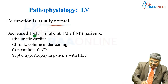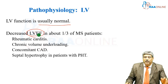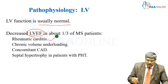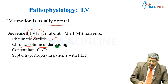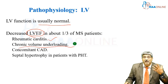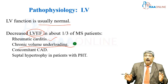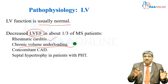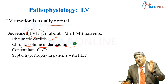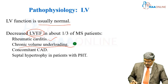Sometimes the ejection fraction of the left ventricle can be altered. This might be due to ongoing active rheumatic carditis, chronic underloading of the left ventricle, or concomitant coronary artery disease. If pulmonary artery pressure is elevated, there may be right ventricular enlargement, and this right ventricle can push the septum to the left side, compromising the left ventricle.